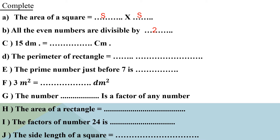Letter C: 15 decimetres equals how many centimetres? To convert from decimetres to centimetres — from big units to small units — we multiply. From decimetre to centimetre, multiply by 10. So 15 × 10 = 150 centimetres.